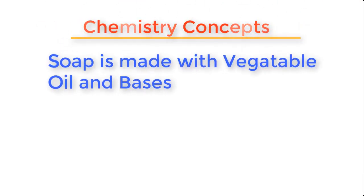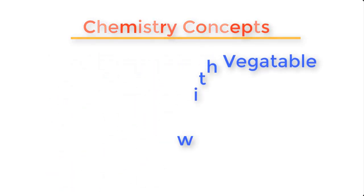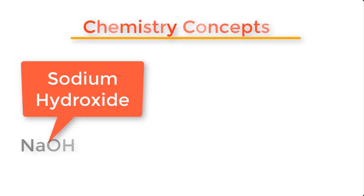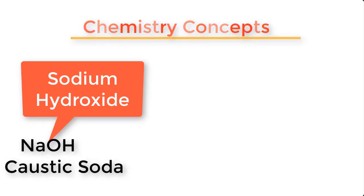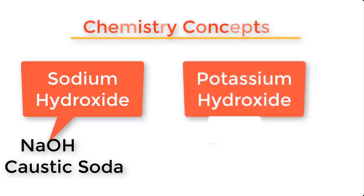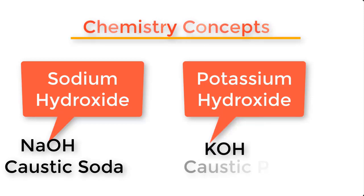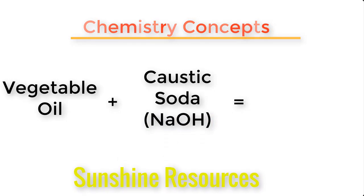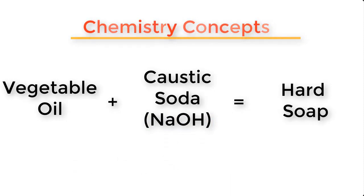Before we go into the production proper, let me explain some basic concepts about soap making using vegetable oils. In chemistry, bases are substances like sodium hydroxide with chemical formula NaOH, also called caustic soda. Another base is potassium hydroxide with chemical formula KOH, also called caustic potash. When you react vegetable oil with caustic soda, that is sodium hydroxide, you will get a very hard soap. This is what we do when we produce bar soap or toilet soap.